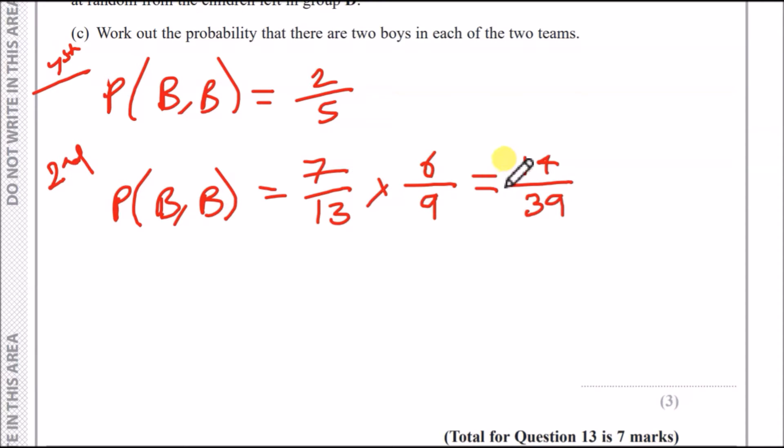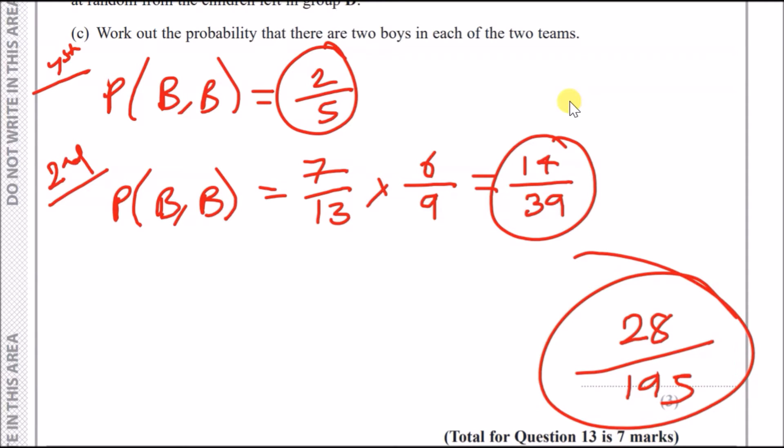So we're almost done now. We just found the probability of this happening. Therefore, to work out the probability that there are two boys in each of two teams, we just put them together. If you multiply both of these together, you'll get a final answer of 28 out of 195. And for people working in decimals, you should have got 0.144 to three decimal places.